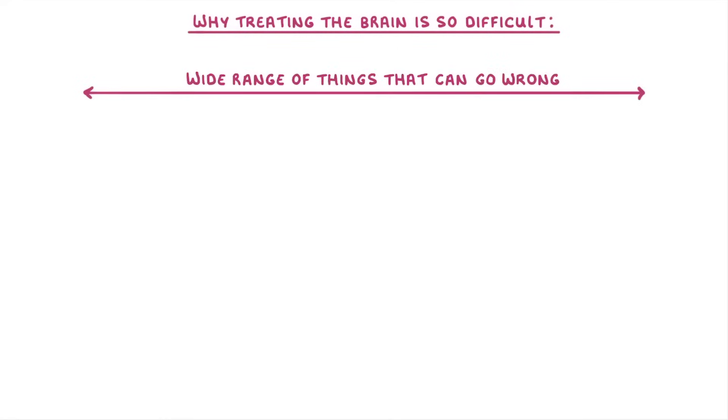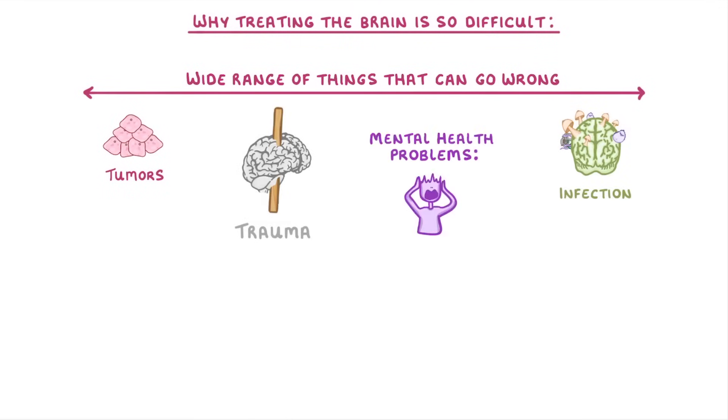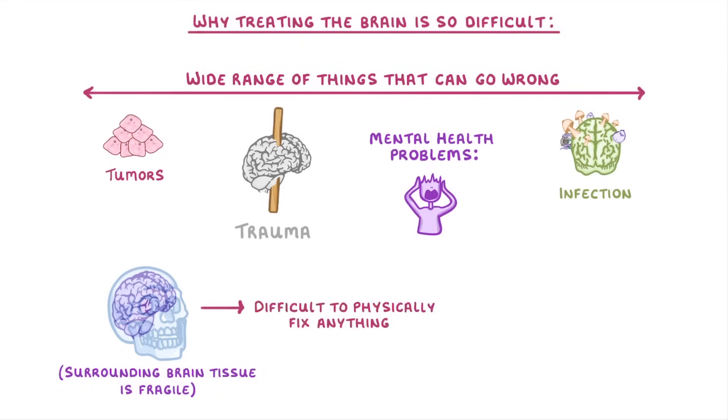The very last thing we need to cover is why treating the brain is so difficult. First of all, there's a really wide range of things that can go wrong with the brain, including tumors, infections, and trauma, as well as mental health problems like depression. Second, the fact that it's encased within our skull, and that the surrounding brain tissue is also fragile, makes it extremely difficult to physically fix anything, like with surgery.